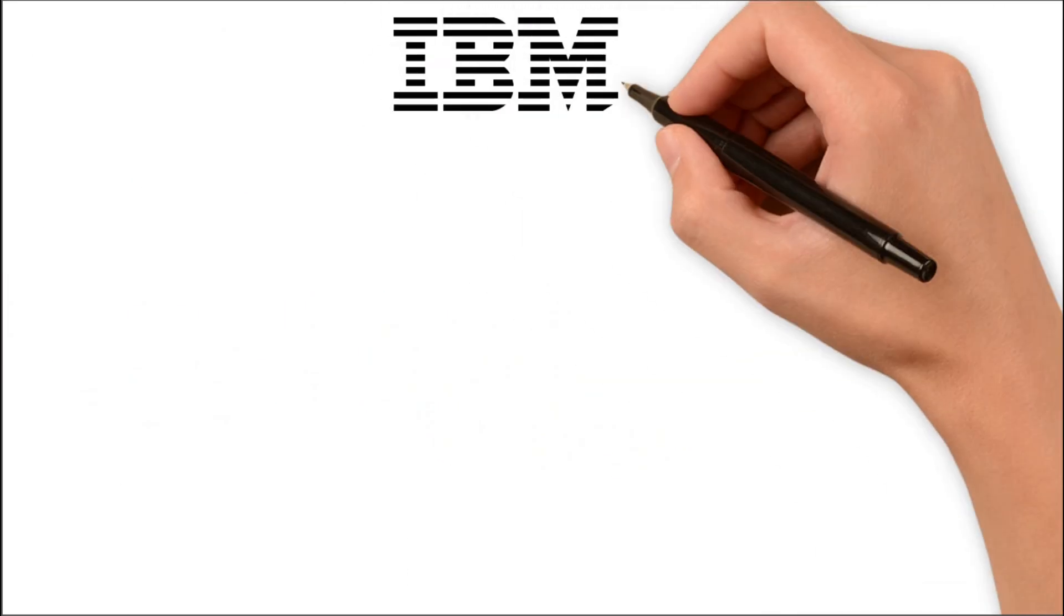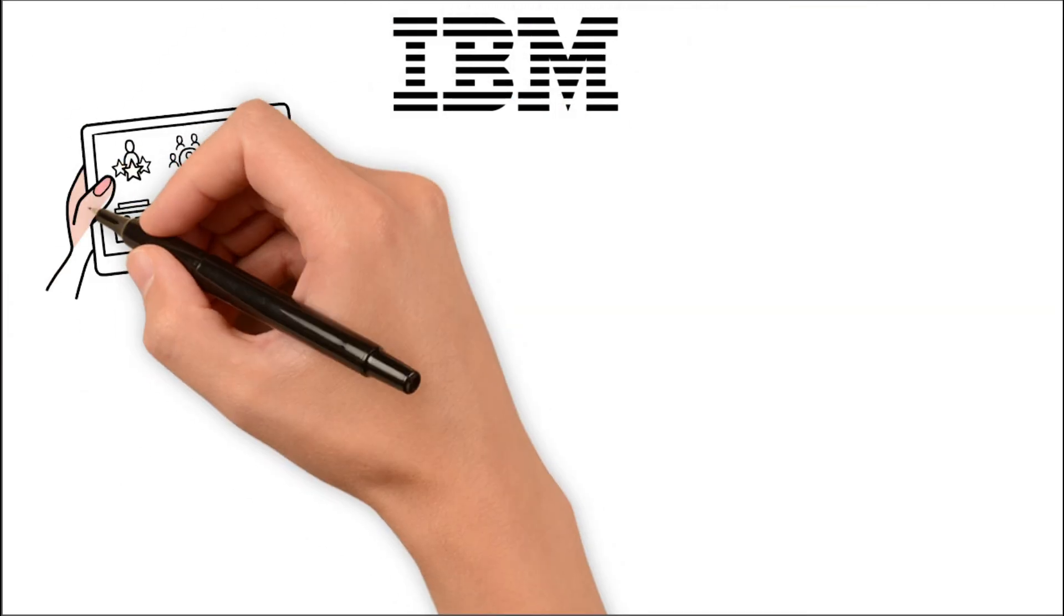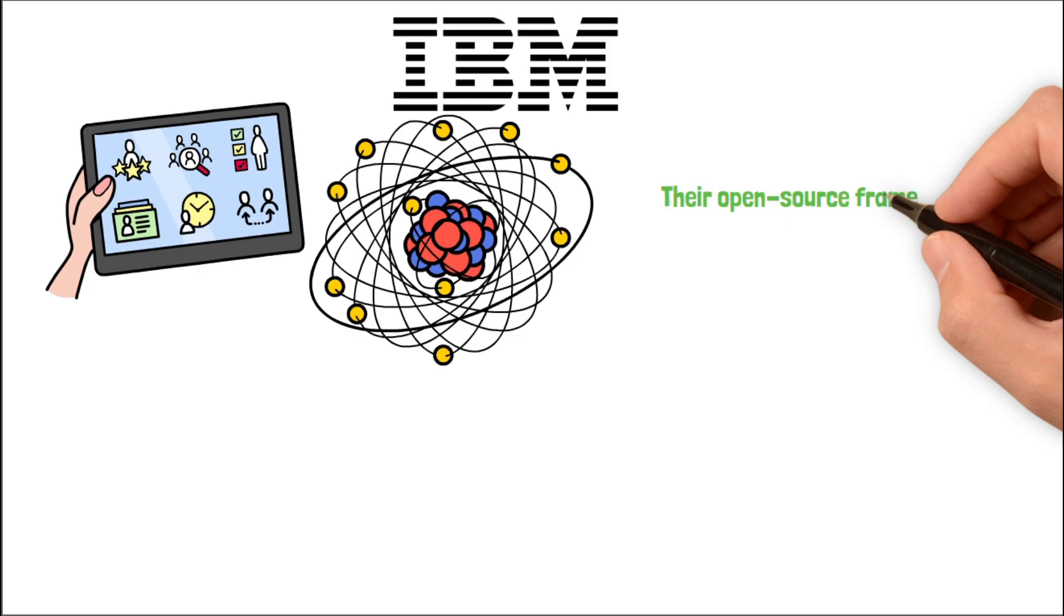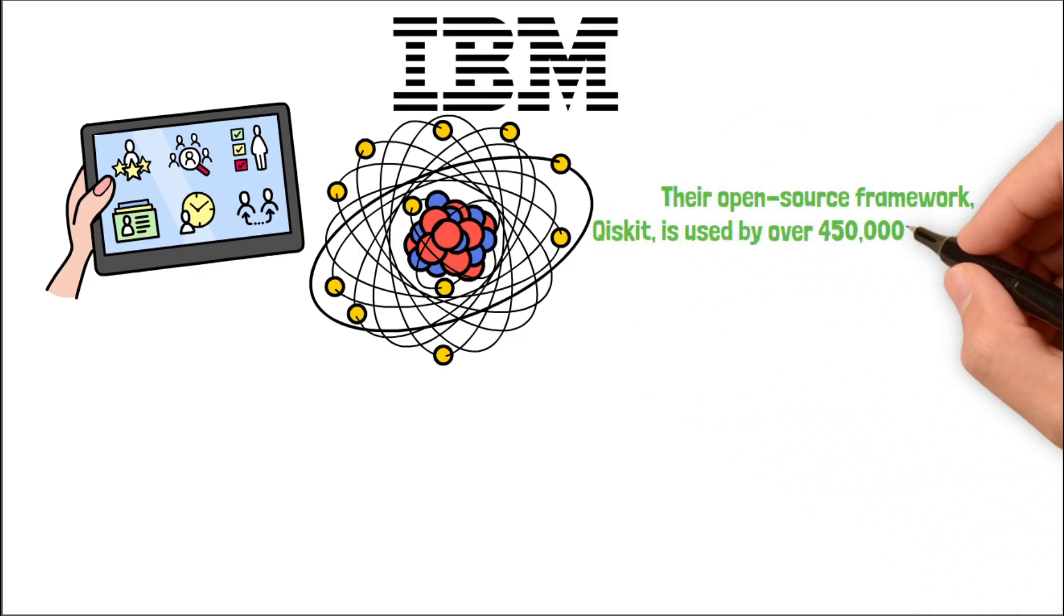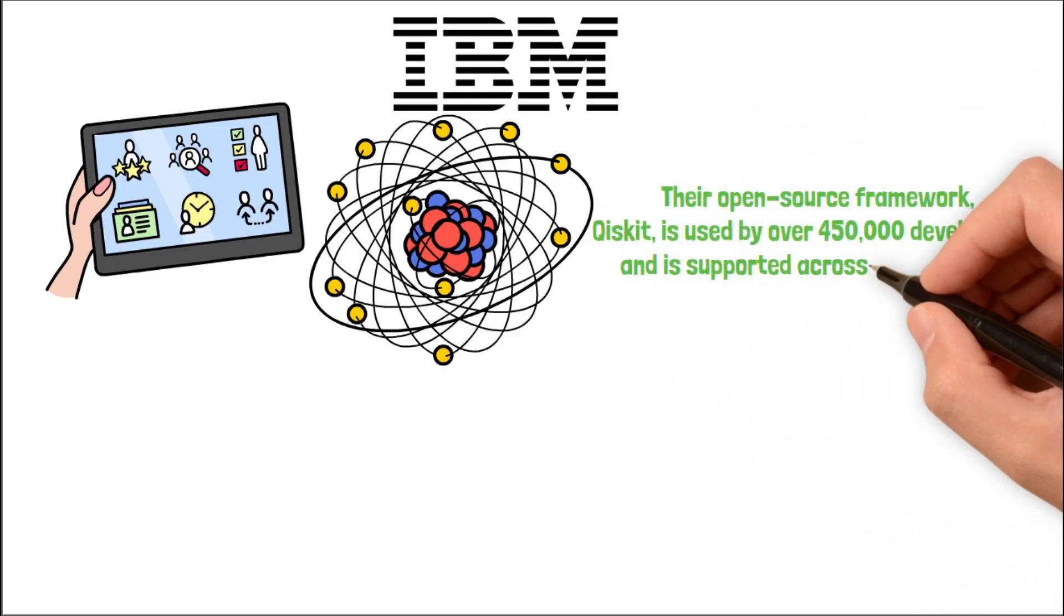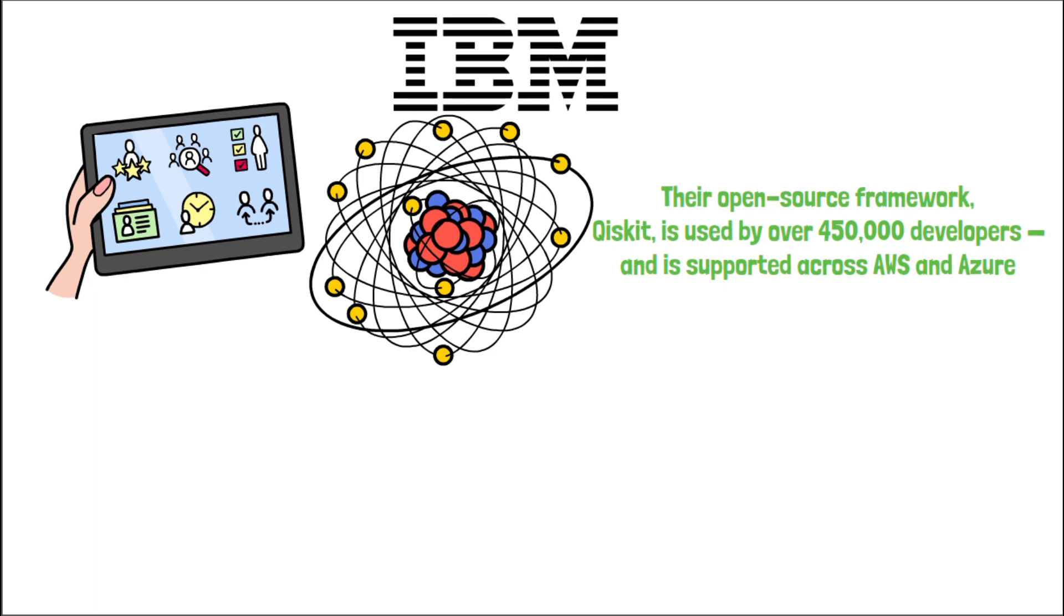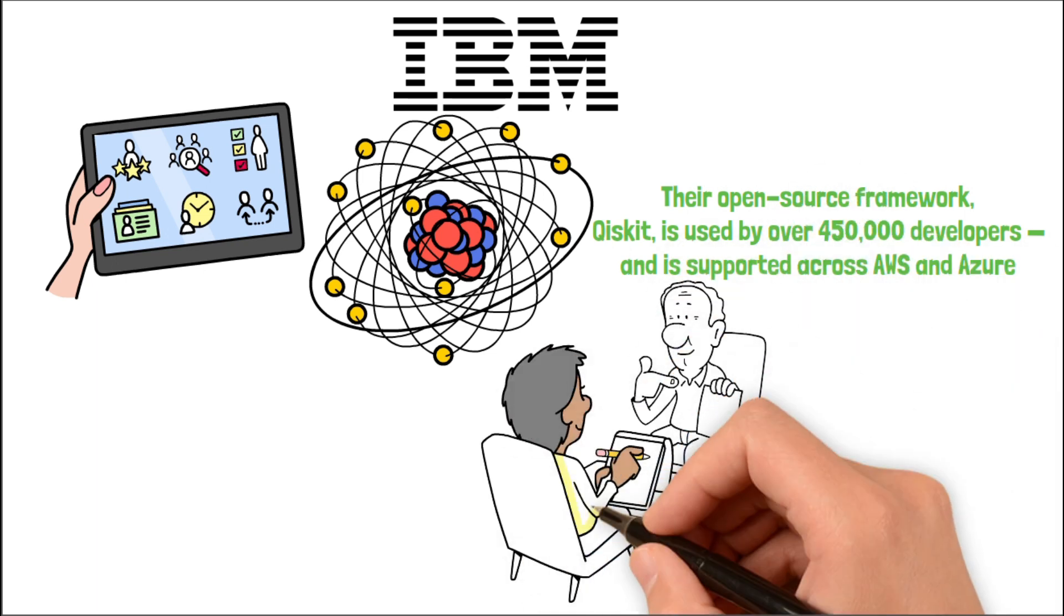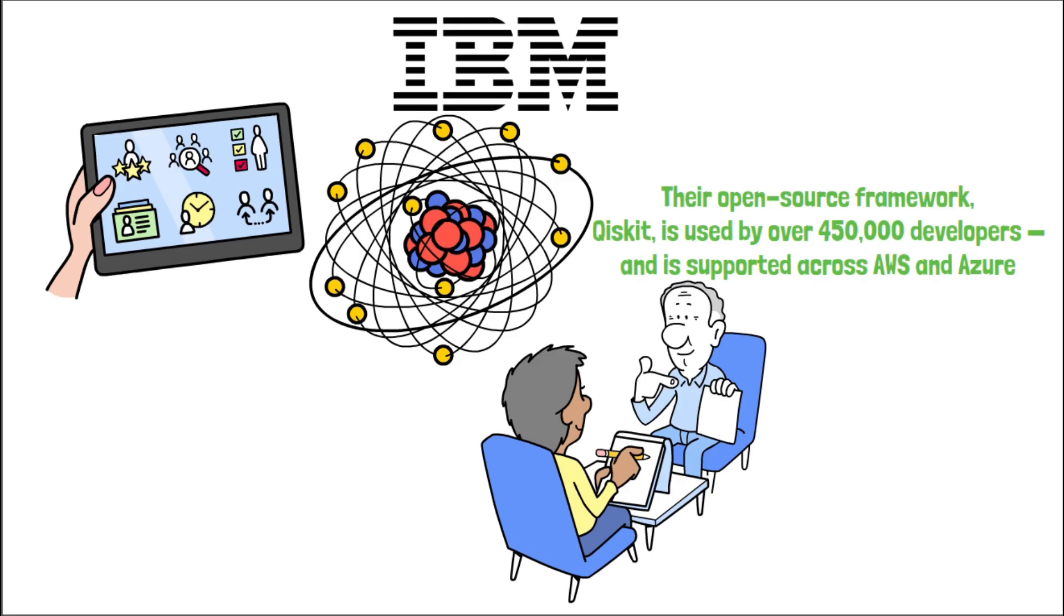And finally, IBM, the old-school tech player most people overlook. IBM has quietly become the standard in quantum software. Their open-source framework, Qiskit, is used by over 450,000 developers and is supported across AWS and Azure. They're not just building quantum systems, they wrote the language everyone else is using.